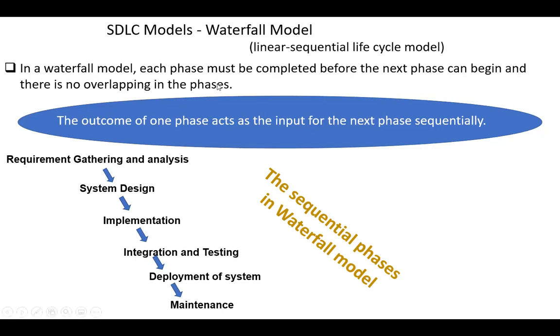In a Waterfall model, each phase must be completed before the next phase can begin, and there is no overlapping in the phases. The outcome of one phase acts as the input for the next phase sequentially.